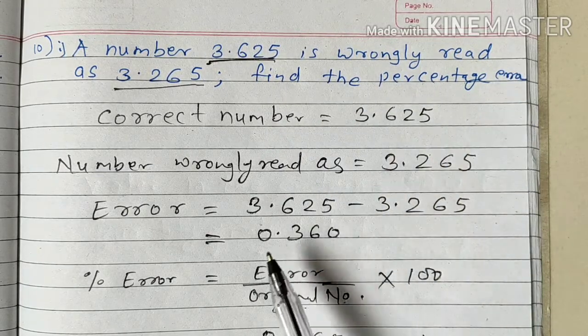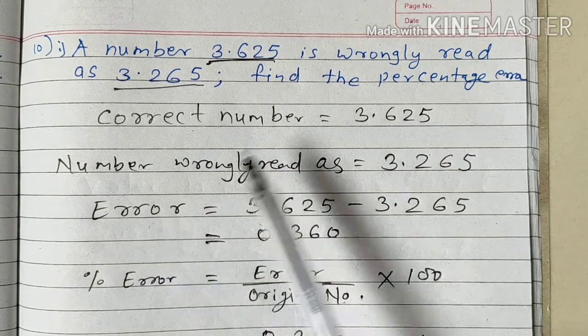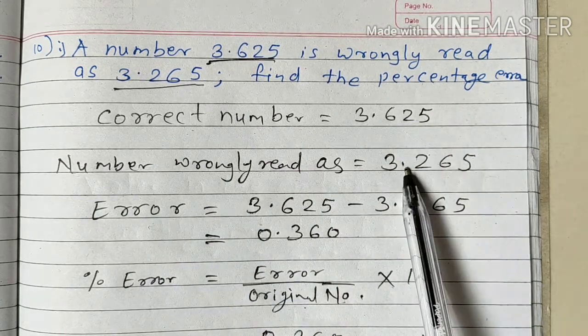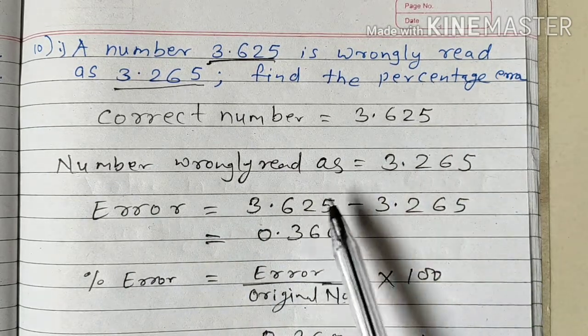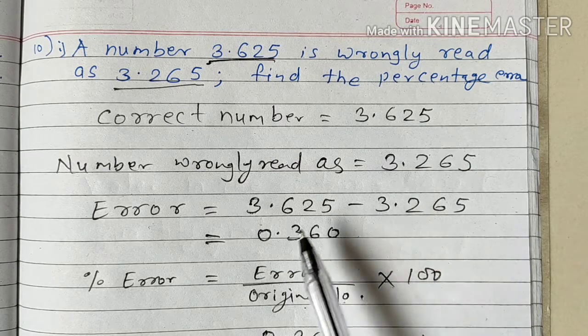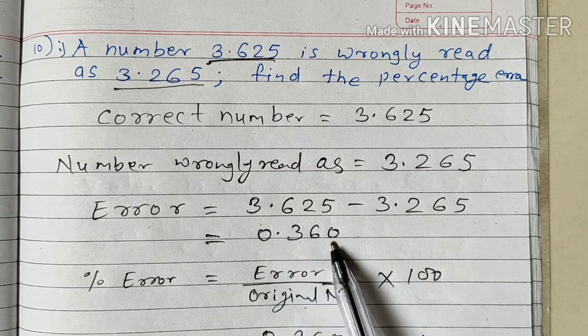For that, find out the error first. Make a difference of these two numbers — greater number minus smaller number. We are getting 0.360.